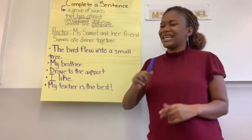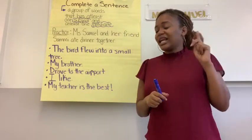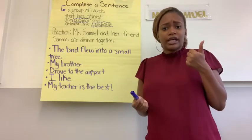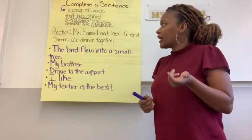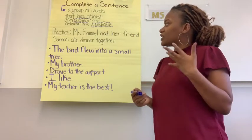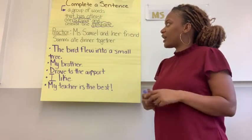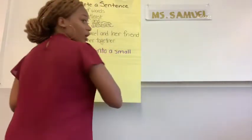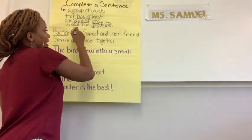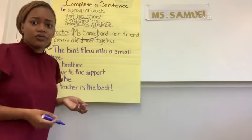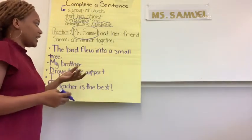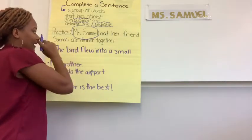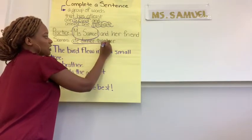Thinking about this — do I see at least one subject? Thumbs up if you see at least one predicate. I know the subject is a noun that does the action, so the subject can be Ms. Daniel and her friend Sammy — I'm just going to circle Ms. Daniel for now. And then I know that the predicate starts with a verb. I see a verb: ate dinner together. That tells us what the subjects are doing, so I'm going to underline that predicate.